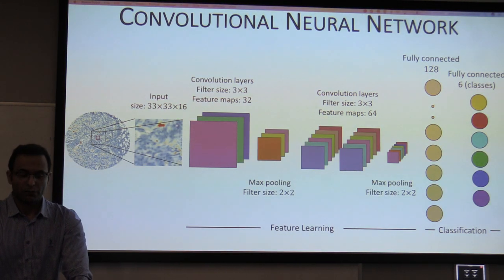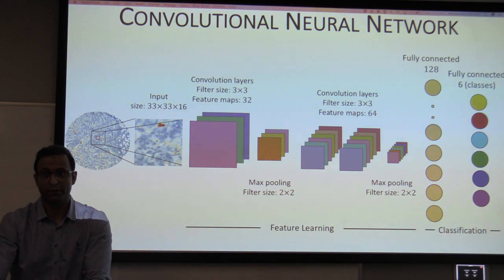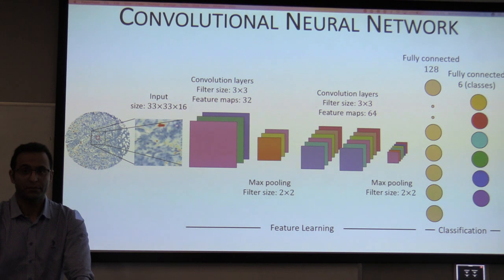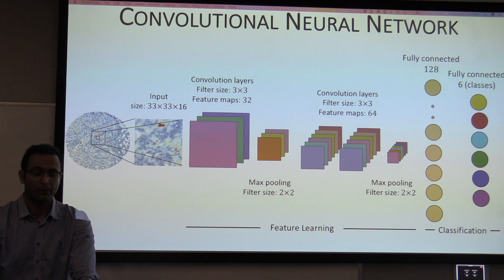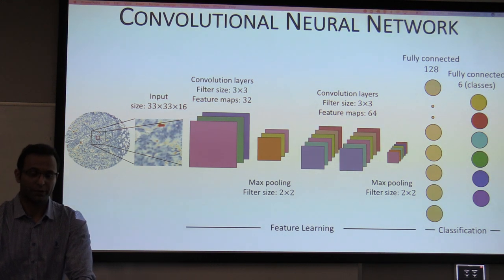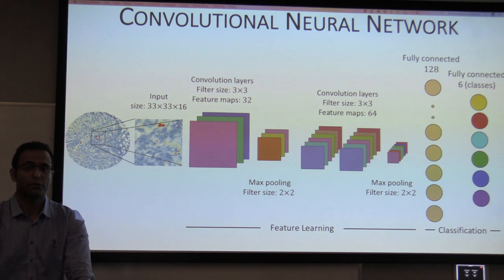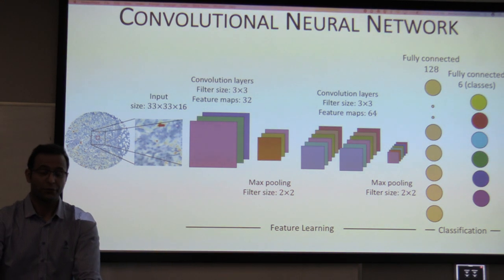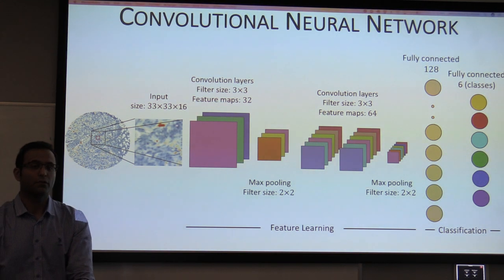I used a convolutional neural network for this project, which is a pretty complex algorithm and is very effective for image recognition and image classification. It has two parts: the convolutional part, where the image first goes through to learn features and detect edges and shapes, and then it goes through the fully connected layer for the classification.